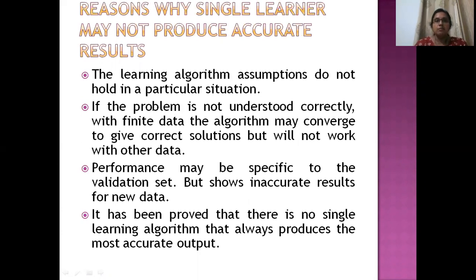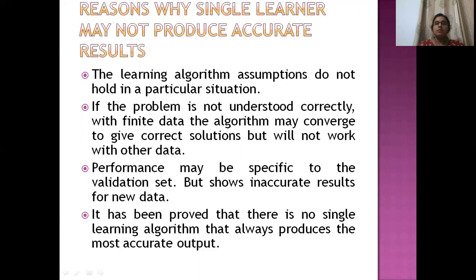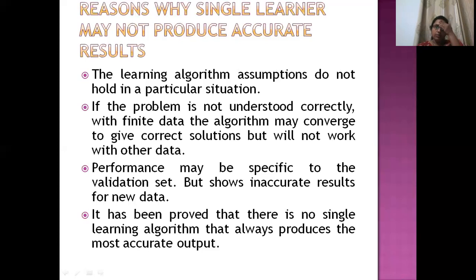A single learner may not produce accurate results for many reasons. Every learner is different. One reason is that the learning algorithm's assumptions may not hold in a particular situation. If the assumptions made on the training data do not apply to all situations, or if there are insufficient training samples, the single learner may fail to learn the situation completely.